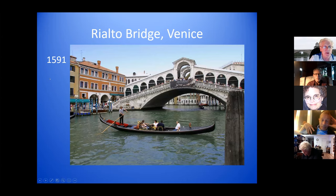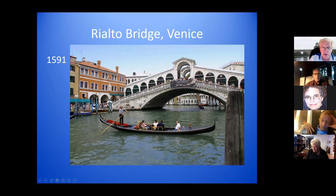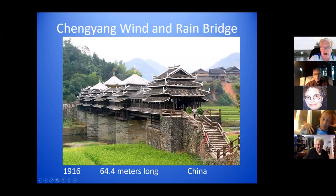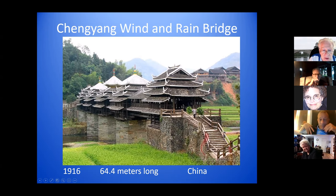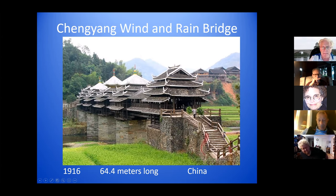This is the Rialto Bridge, built in 1591. The first bridges built in Venice were timber bridges, but then they started building stone arch bridges. This is over the Grand Canal; there are three other bridges over the Grand Canal now. This is in China — the Chengyang Wind and Rain Bridge, built in 1916. You can see it's a beam bridge with supports cantilevering out from short beams to longer beams. That's the most famous of the wind and rain bridges.